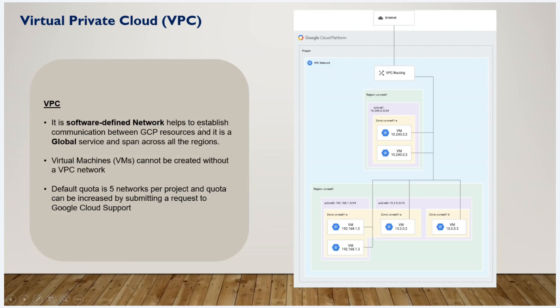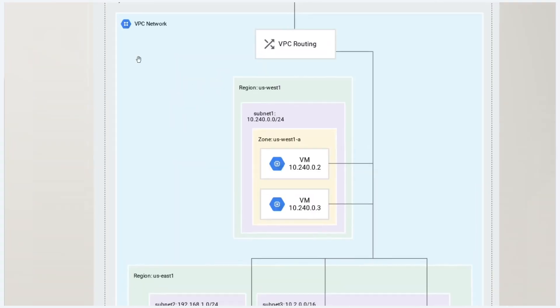Once we create a VPC, we can run the network. When we run a virtual machine, we first create a VPC. Per Google Cloud project, we can create 5 networks. We can contact the support team to increase the quota limit to avoid accidental creation of networks.